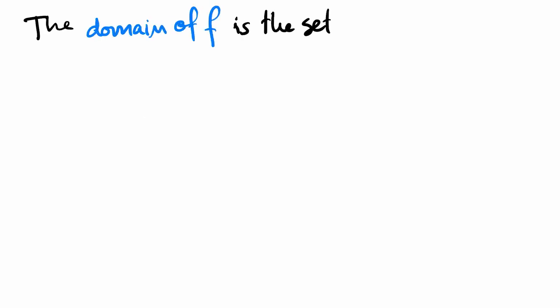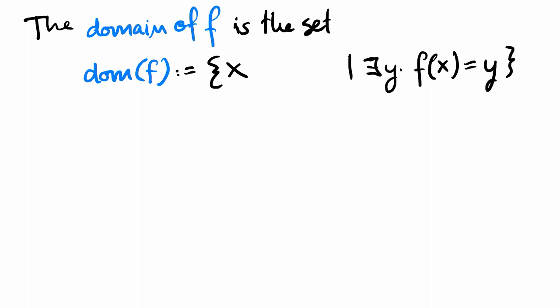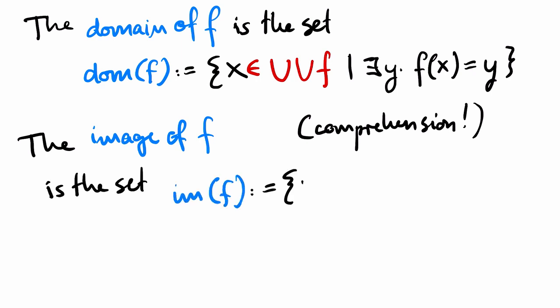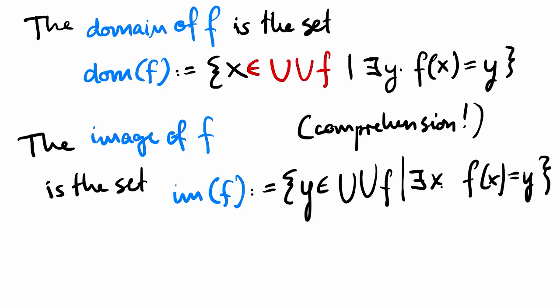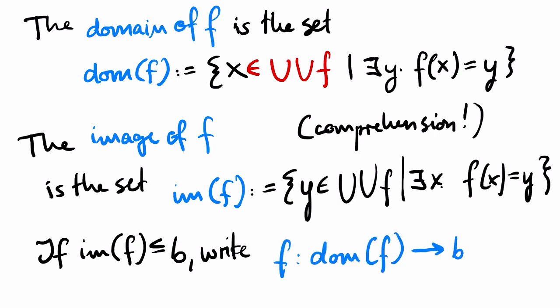The domain of a function f is the set of all x such that there exists a y with f(x) = y. This expression is not covered by the comprehension axiom. The reason is that x is not guarded by some set. In our notation for comprehension, x must be an element of some set that we already know to exist. But in this case here, it is easy, because we know that x will be an element of the union of the union of f. So by comprehension, we can be sure that the set I wrote down, the domain of f, really exists. Similarly, we define the image of f as the set of all y such that there exists an x with f(x) = y. If the image of f is contained in some set B, we use the well-known notation f: domain(f) → B. In this notation, B can be larger than the image of f.